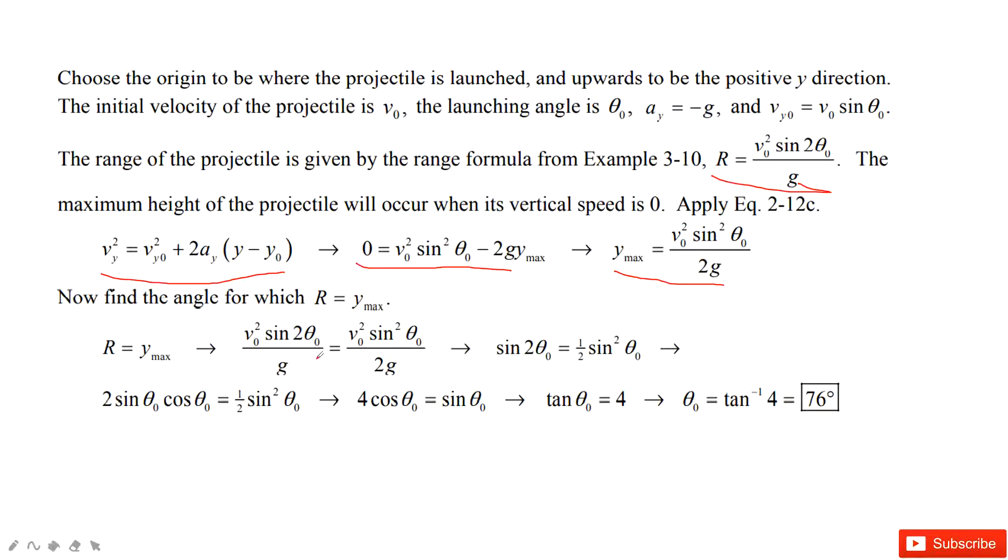We can solve it. So v0 squared, v0 squared cancel. g, g cancel. Then we get this equation. Can we find the angle theta? Yes, we can use some mathematical tricks. So sin 2θ is 2 sin θ cos θ. Then sin θ, sin θ cancel. So we get tan θ equals 4, and we can get this angle, which is 76 degrees. Thank you.